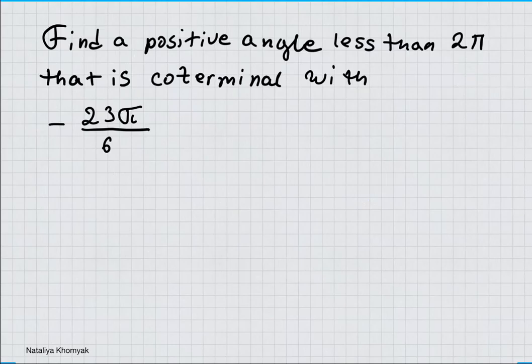In this problem, we have to find a positive angle less than 2π that is coterminal with negative 23π/6. Since this fraction is negative, I will be adding circles to make it into a positive value, which are 2π.